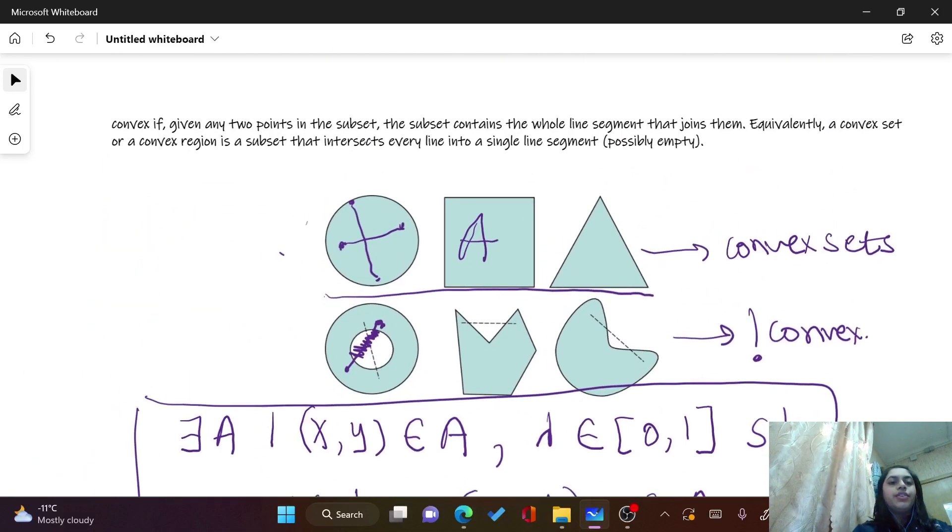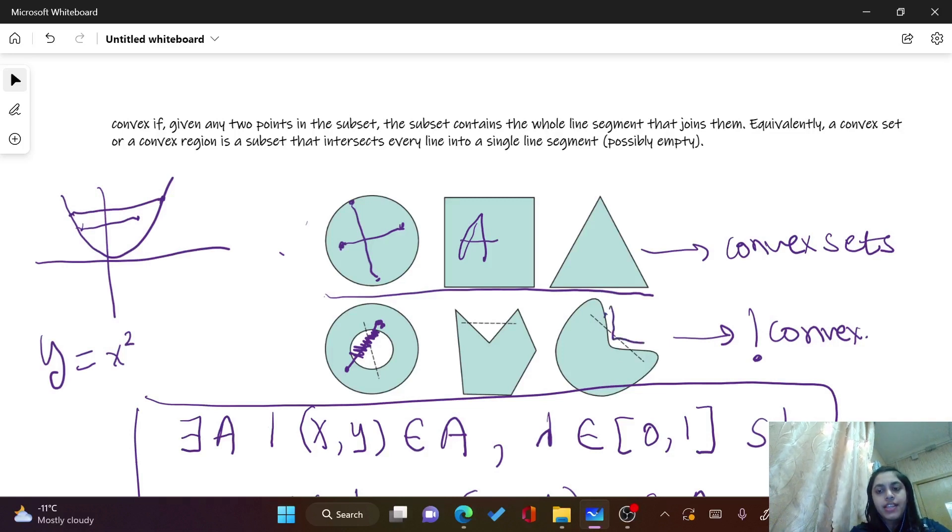So in general, you can see that the convex figure, now for example, y equals x square, this graph, if you take any two points, it's always going to be between. So it's not outside the graph. So what I'm trying to say is if you see every time the boundary of the convex set, the boundary is also convex. Like for example, like this, the boundary is not convex here and thereby the set is not convex as well.